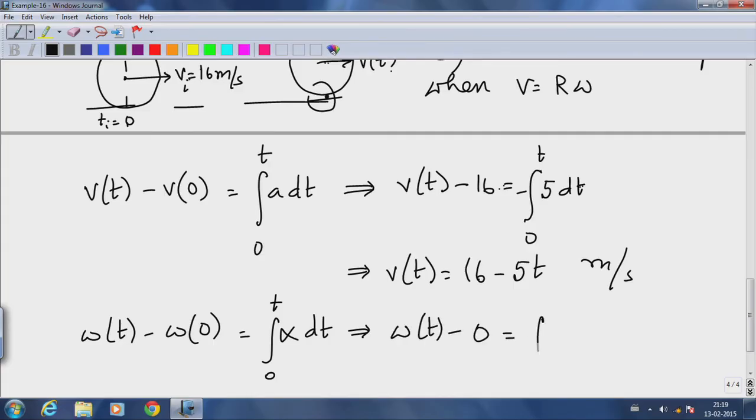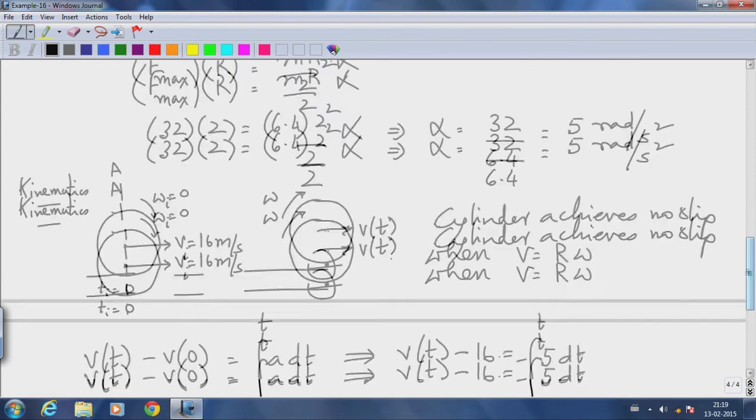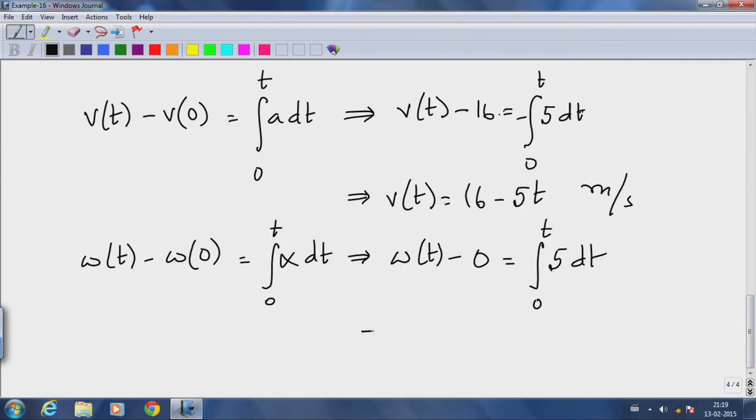Which implies omega of t minus zero equals plus 5, because the angular acceleration is plus 5 radians per second squared, which also implies omega of t equals 5t radians per second.